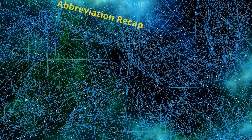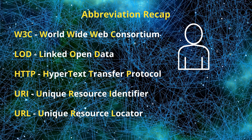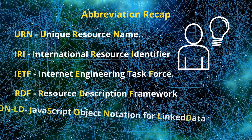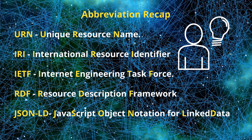Let's have a quick recap of all the abbreviations covered. W3C: World Wide Web Consortium. LOD: Linked Open Data. HTTP: Hypertext Transfer Protocol. URI: Uniform Resource Identifier. URL: Uniform Resource Locator. URN: Uniform Resource Name. IRI: Internationalized Resource Identifier. IETF: Internet Engineering Task Force. RDF: Resource Description Framework. JSON-LD: JavaScript Object Notation for Linked Data.